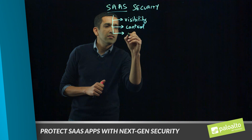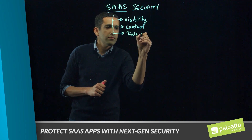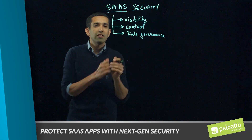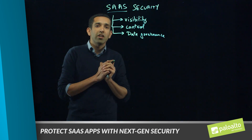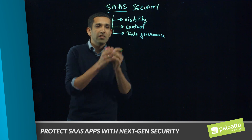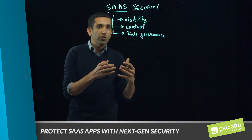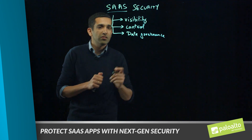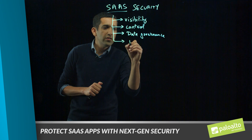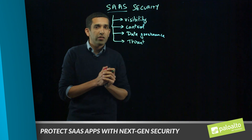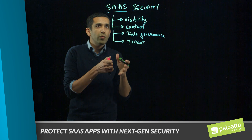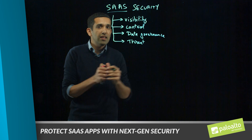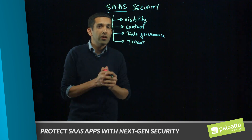The third one is data governance. The first two are all about access control, but the third one is actually about data sitting within these SaaS applications. If you have sensitive data within these SaaS applications, it's important for your IT team to know, as well as to prevent sensitive data from flowing out. And finally, the fourth one is threat protection — if you have a piece of malware sitting in these SaaS applications, you want to prevent that from happening, as well as prevent the spread of malware within these applications.